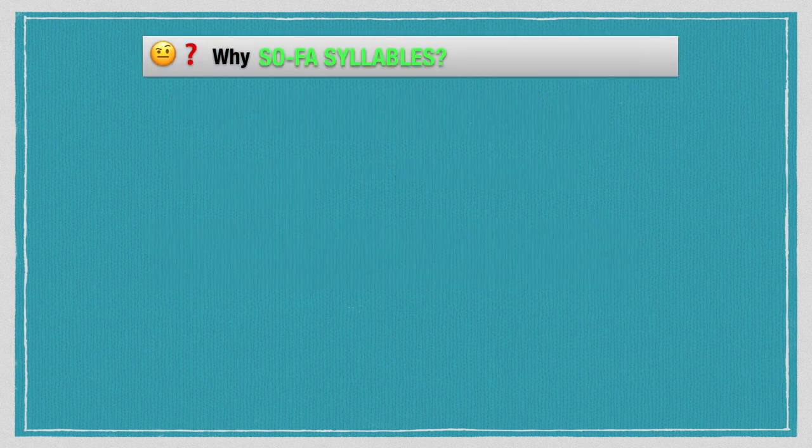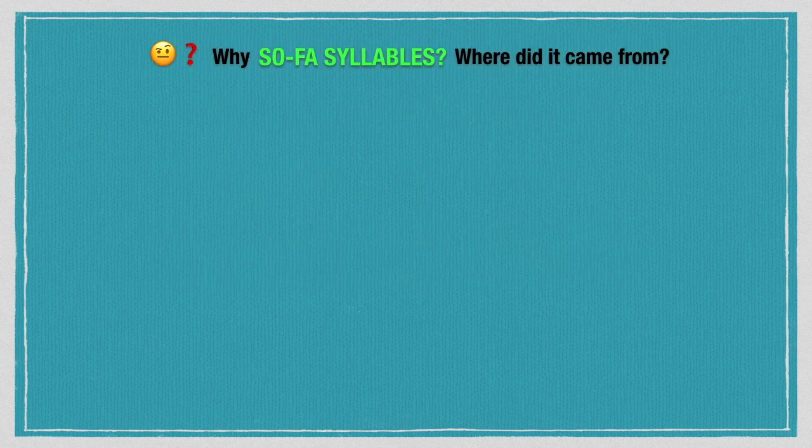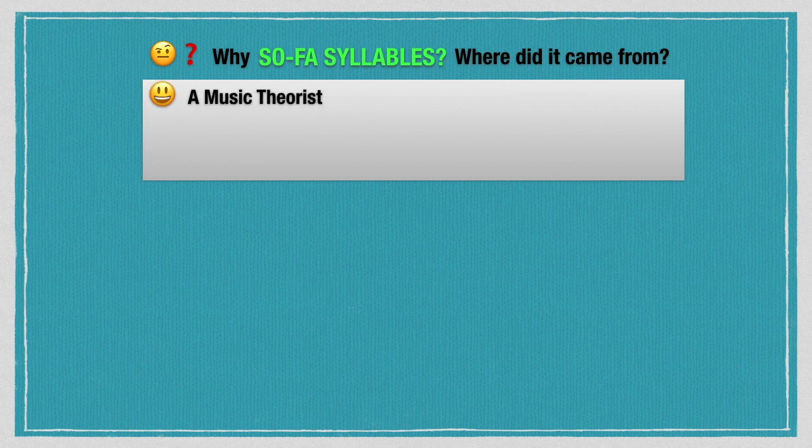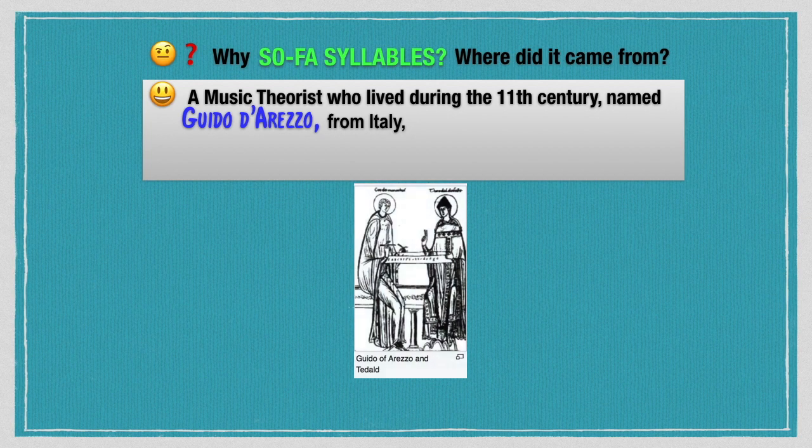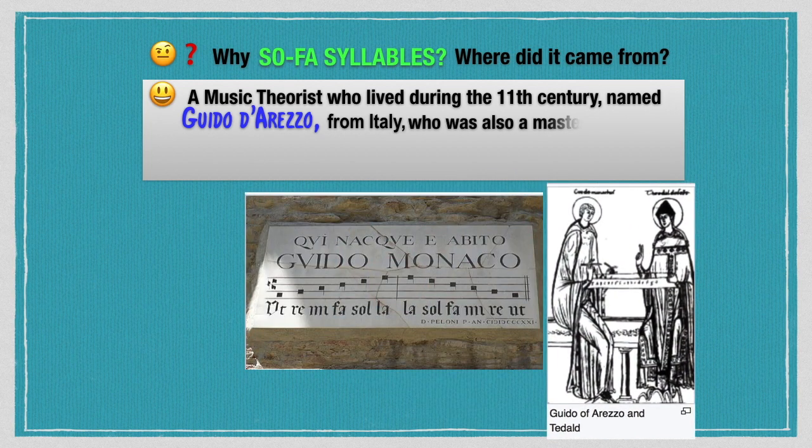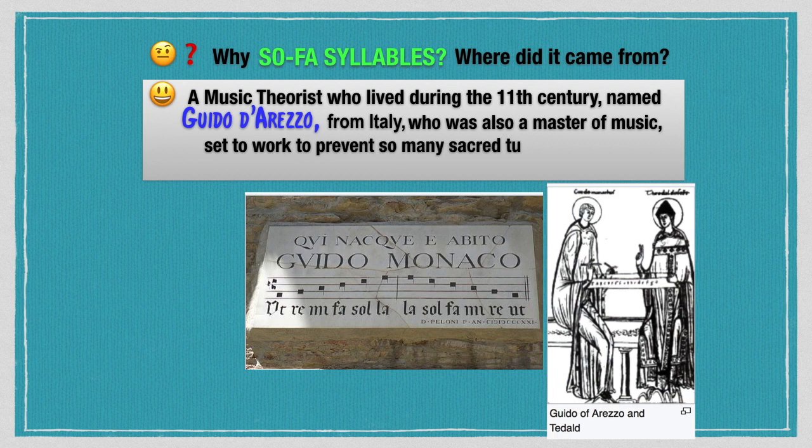Why sofa syllables? Where did it came from? A music theorist who lived during the 11th century named Guido de Retzo from Italy, who was also a master of music set to work to prevent so many sacred tunes from being lost.